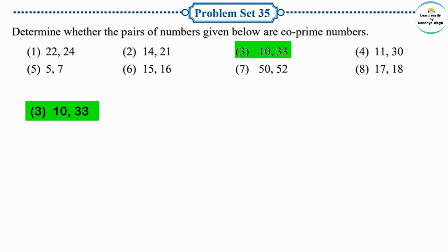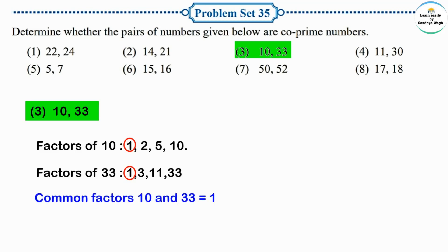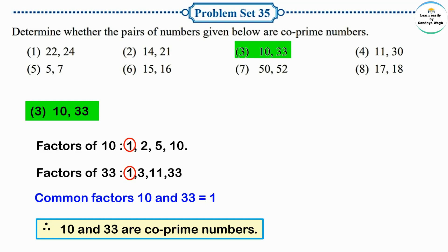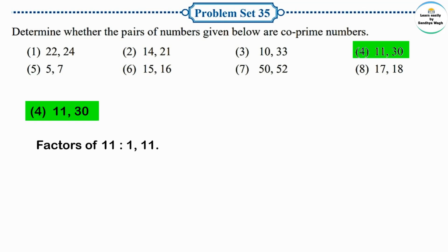Next pair: 10 and 33. Factors of 10: 1, 2, 5, and 10. Factors of 33: 1, 3, 11, and 33. The common factor of 10 and 33 is only 1. Therefore, 10 and 33 are co-prime numbers.